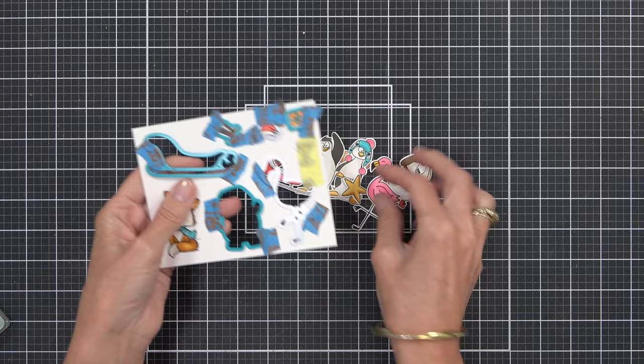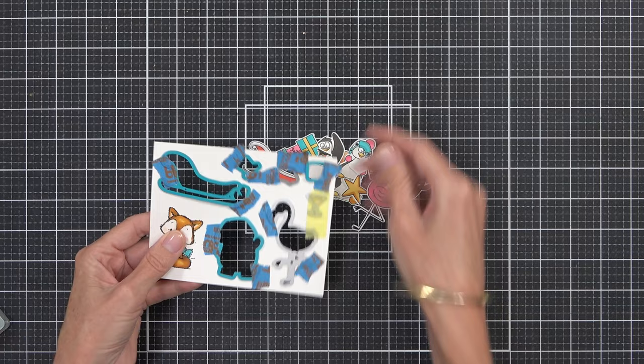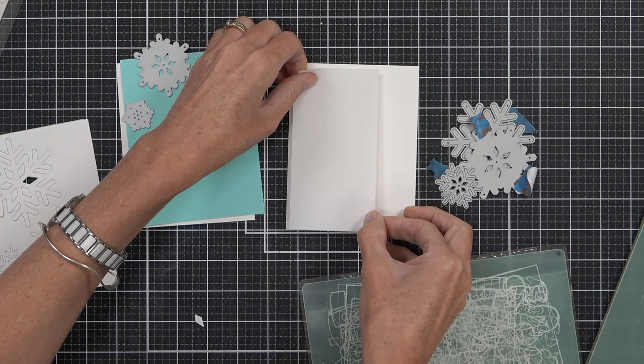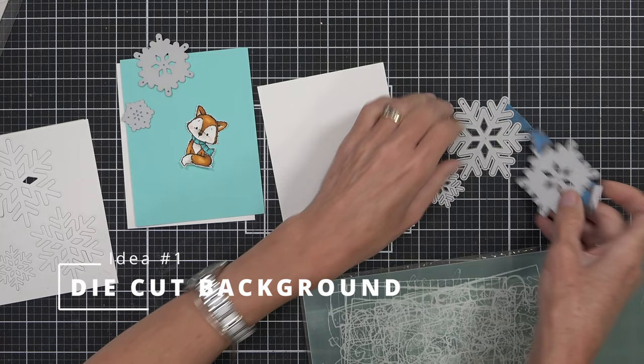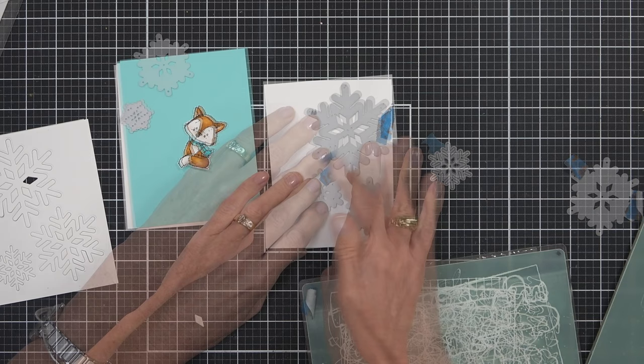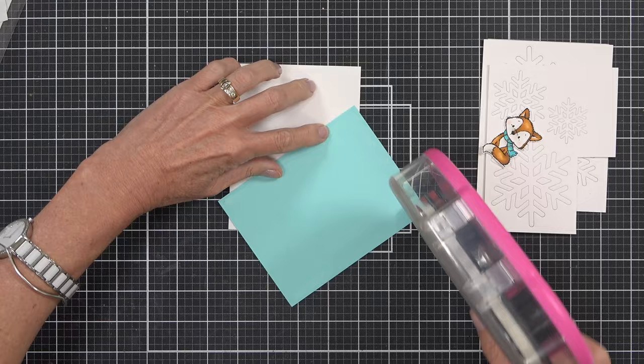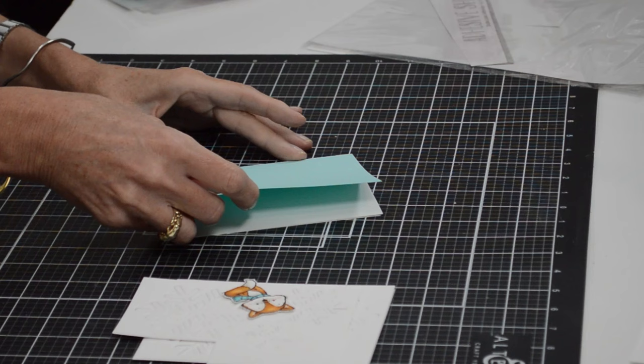Alright so once I've batched out all my stamping coloring and cutting I'm on to my first technique and it is to create a die cut background. I decided to use some snowflakes today and you can use whatever kind of pattern you want. You could use a geometric pattern. If you've got a cover die that would work really well as well. You could even stamp a snowflake background if you've got some snowflake stamps.